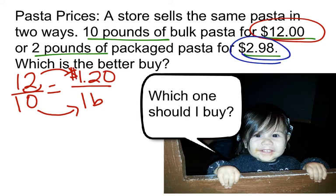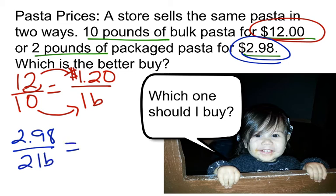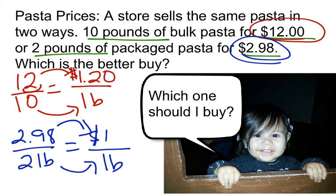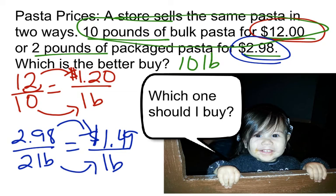Now looking at the packaged option: $2.98 for 2 pounds. How much is it for one pound? Dividing by 2 gives $1.49 per pound. So in this case, 10 pounds of bulk pasta for $12 is the better buy. You can see how unit rate can really help you out, especially when you're comparing prices.